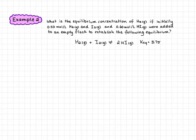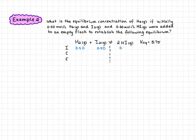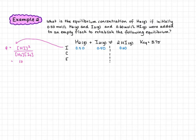For our second example: what is the equilibrium concentration of hydrogen gas if initially 0.5 moles per liter of hydrogen and iodine gas and 0.6 moles per liter of hydrogen iodide gas were added to an empty flask to establish the following equilibrium, with a Keq of 3.75? We construct our ICE table and fill in our known values: initial concentrations are 0.50 for both reactants and 0.60 for our product. We now calculate Q: Q equals the concentration of hydrogen iodide squared over the concentration of hydrogen times iodine, so 0.60 squared over 0.50 times 0.50.